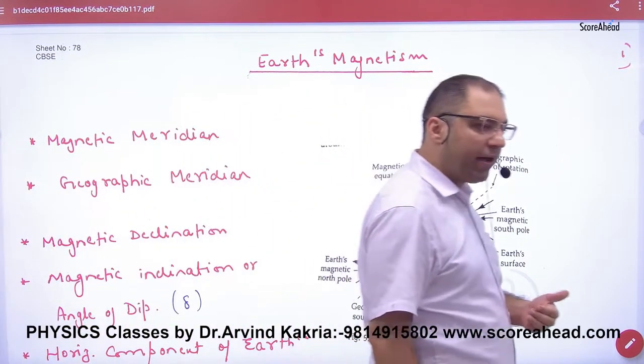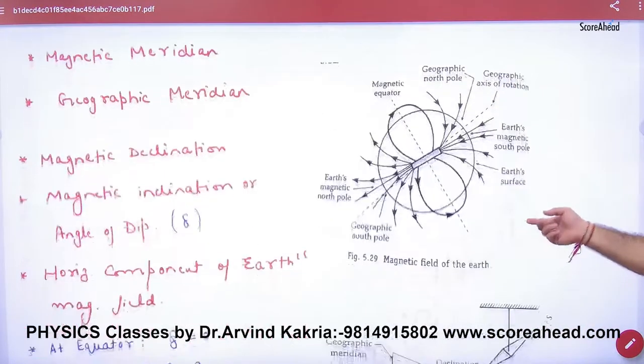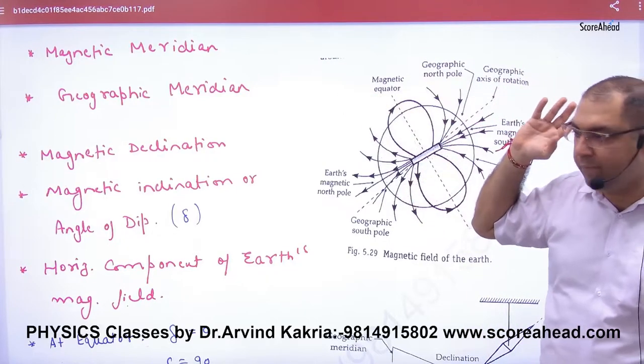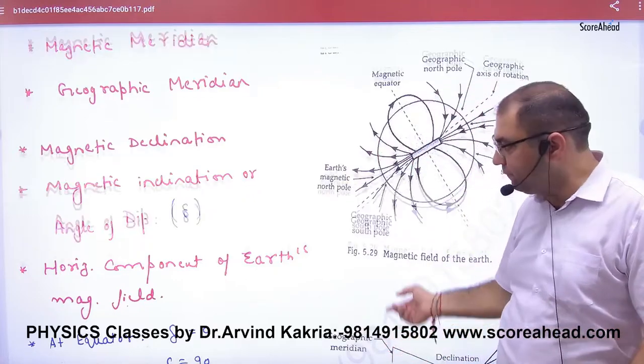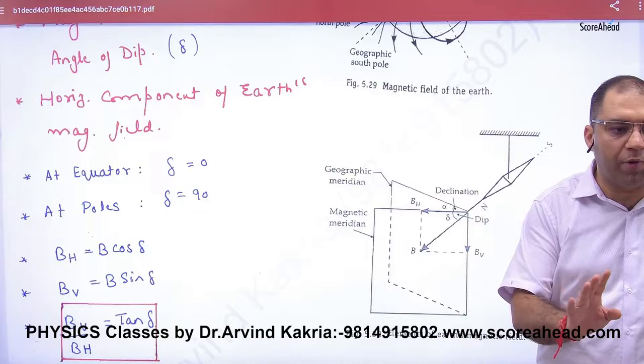Sheet number 78: Earth magnetism. We have seen the magnet, magnetic meridian, geographic meridian, magnetic declination, dip, and horizontal component. These are very important values that you will find in the paper.